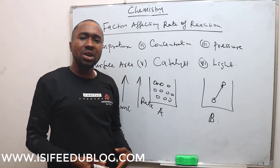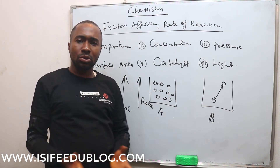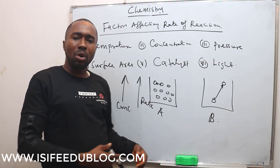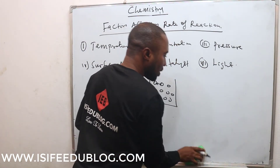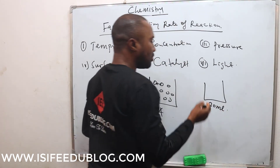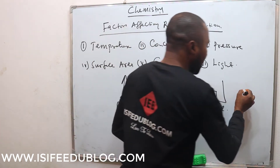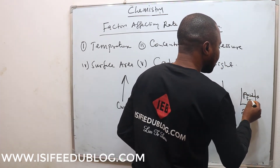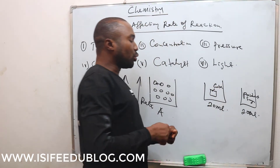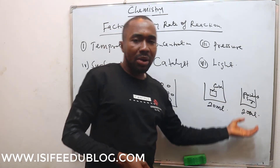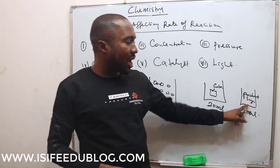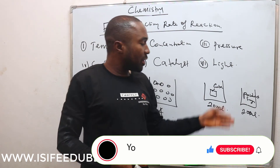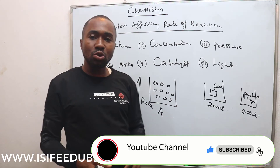The next is surface area. When we are talking about surface area, we are talking about the space available for the reactant particles to react. Like if somebody is dissolving a cube of sugar in 20 ml of water, and another person is also dissolving powdered sugar in the same volume of water — the cube of sugar will take a longer time to dissolve than the powdered sugar. The reason is because the powdered sugar has more surface area; the surface area of the powdered sugar is higher than that of the cube of sugar, so the powdered sugar will dissolve faster.